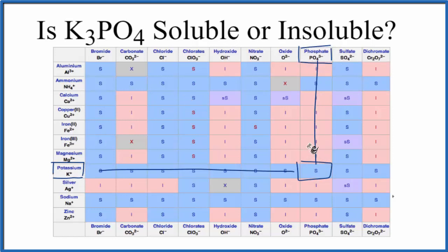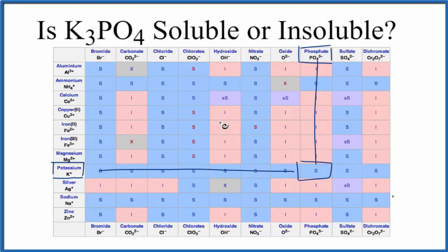Those ions are going to be aqueous — dissolved in water. So according to our table, potassium phosphate is soluble in water as well. One last way we could do this: we could get some potassium phosphate, put it in water, and see if it dissolves. We would expect, based on the rules and based on our table, that it would dissolve in water.